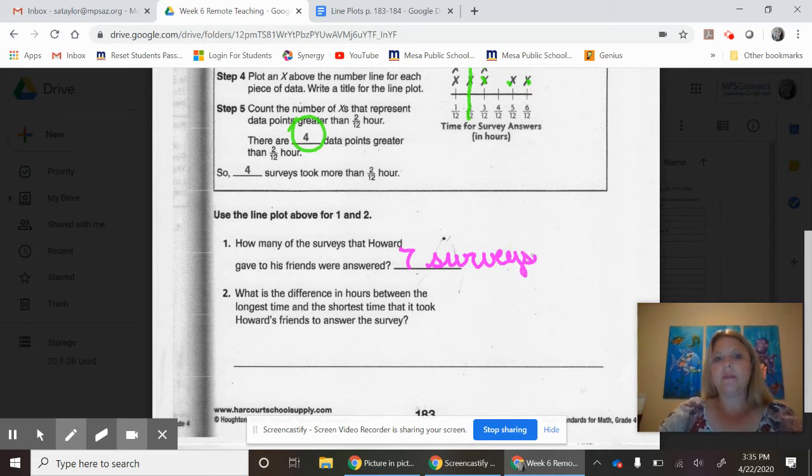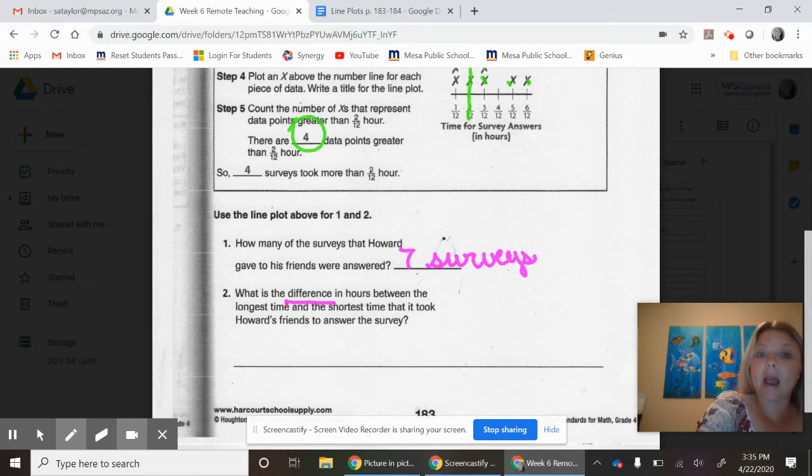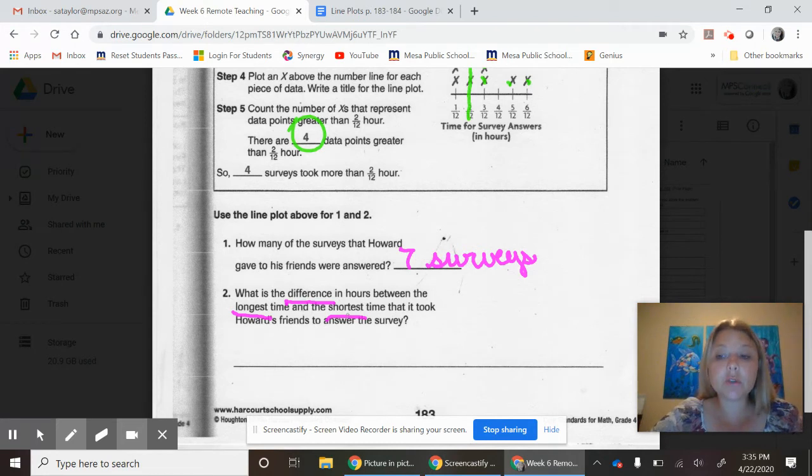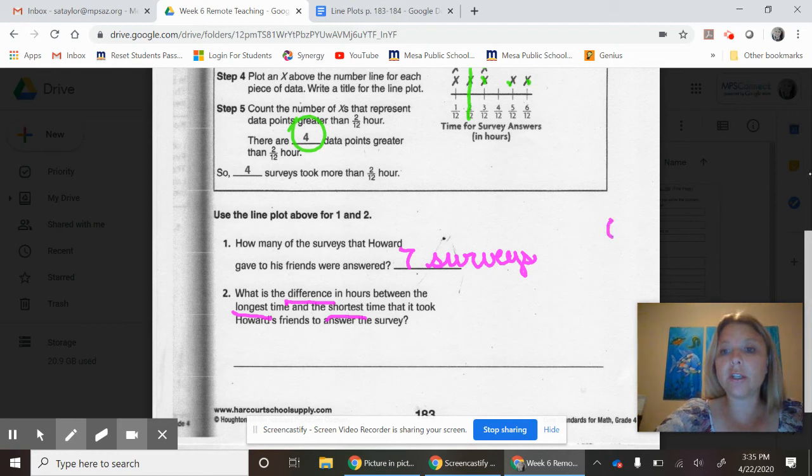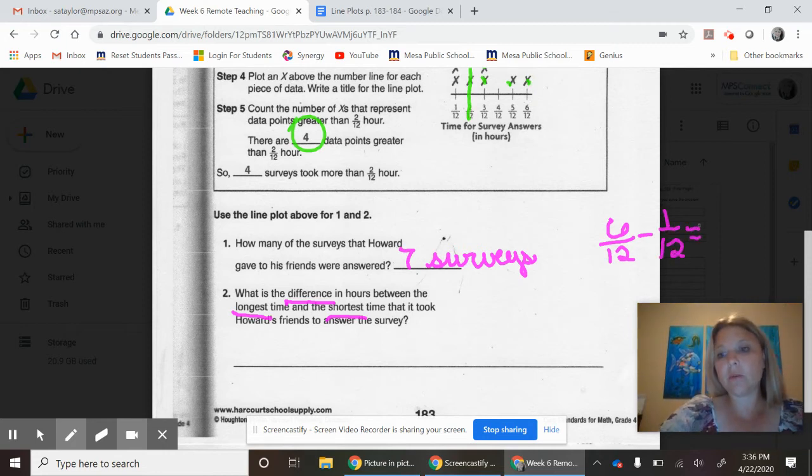I am going to put that right here: I have seven. But again, it's not just that - you need to include a label. How many of the surveys did he give his friends to answer? Seven surveys. Number two: what is the difference in hours between the longest time and the shortest time? What does difference mean? If you said subtraction, you are correct.